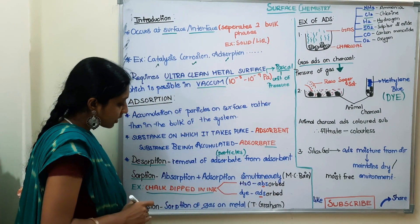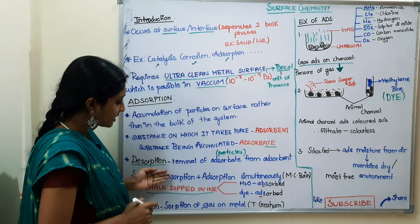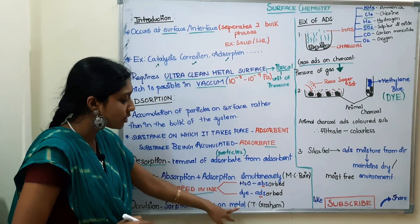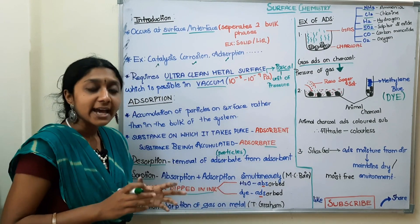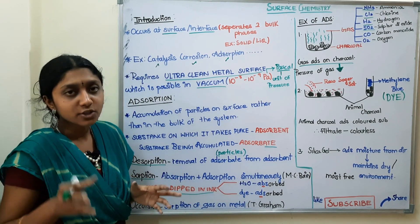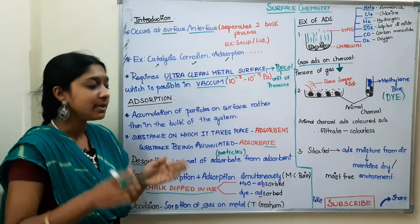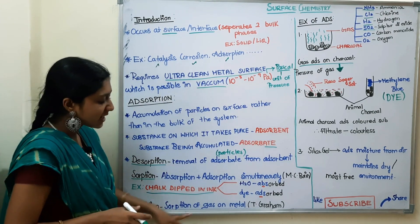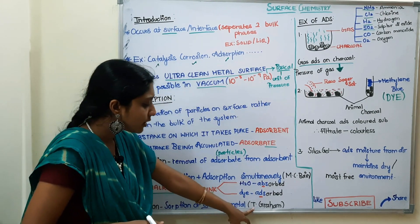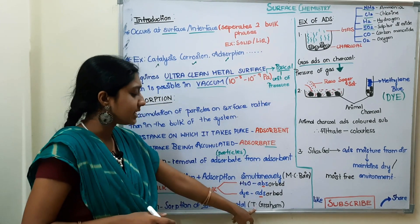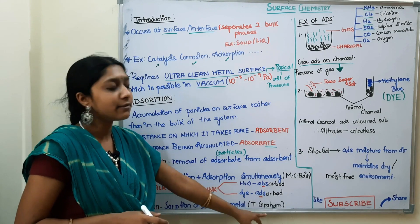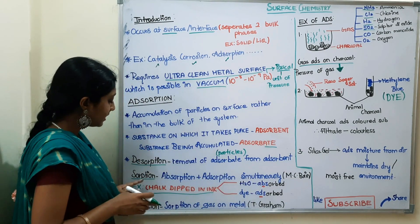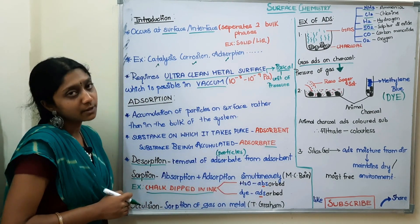Next is occlusion. Occlusion is a special case of sorption — it is the sorption of gas on a metal surface. This term is attributed to Graham and MC Bain.